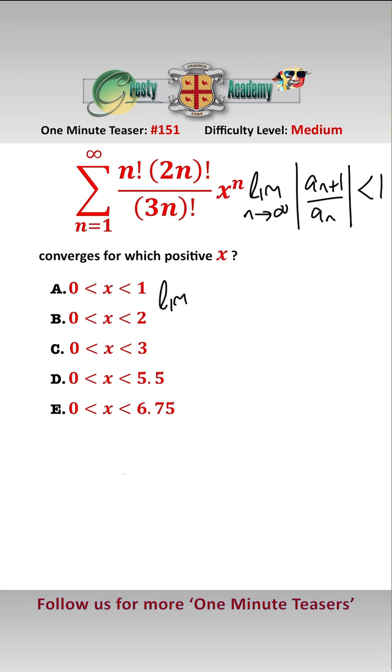So let's have a look at the limit as n approaches infinity of this. It does look a little bit hairy but a lot of it cancels out. So basically we have replacing n by n plus 1 we have n plus 1 factorial 2n plus 1 factorial times mod x to the n plus 1 over 3n plus 1 factorial.